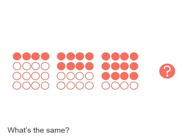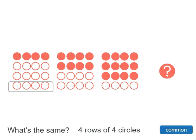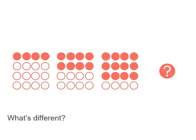Let's think about what's the same between each group of circles. Each group has 4 rows of 4 circles. So that's common among them all. 4 rows of 4 circles. But what's different?